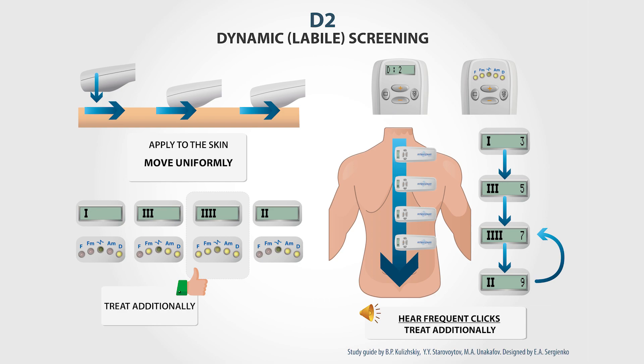In the Chance01 scanner device, you need to find a place on the skin where the number of glowing LED indicators on your device is the biggest. For example, when you move the electrode along the skin, you mainly see one or two glowing indicators, but eventually there are three or four.